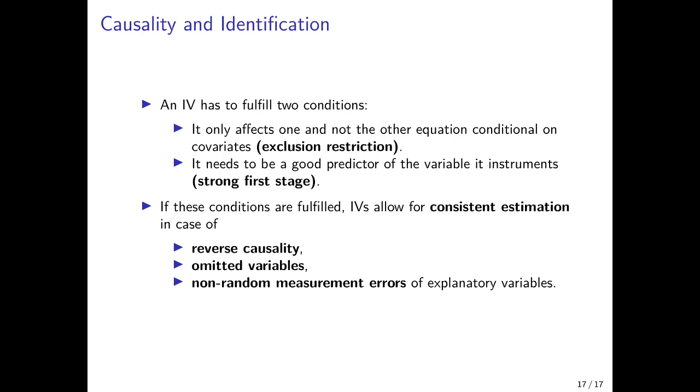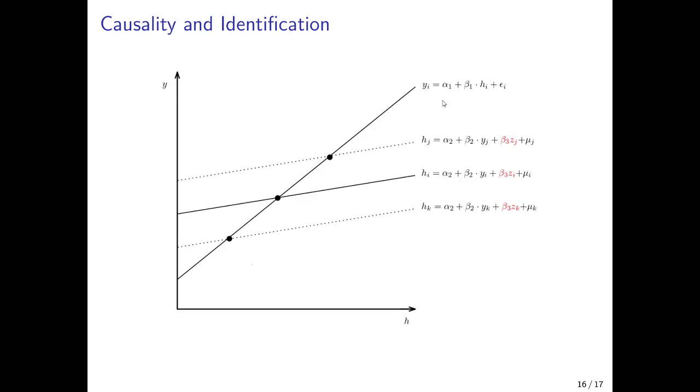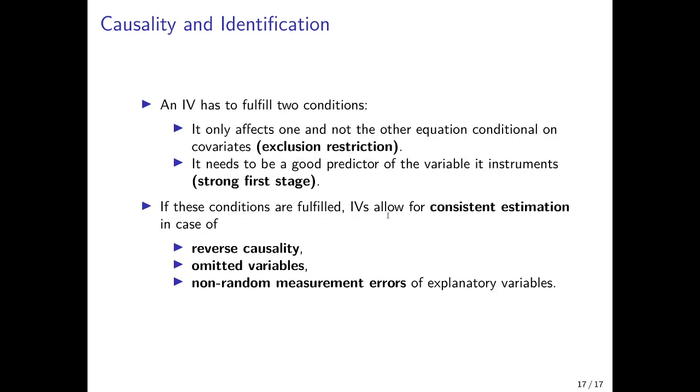Meaning that first, we estimate the relation between health and income conditional on medical innovation. And then we plug in the predicted value of health by varying medical innovation into the other equation and estimate this equation in the second stage. And this allows us to derive consistent estimates of the causal effect of health and income, so of the beta coefficient that we are interested in here, this beta 1 coefficient.